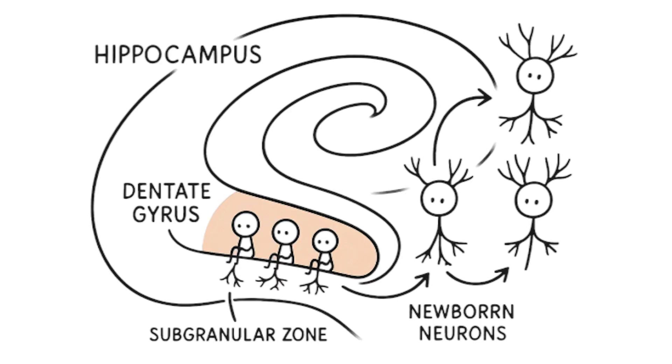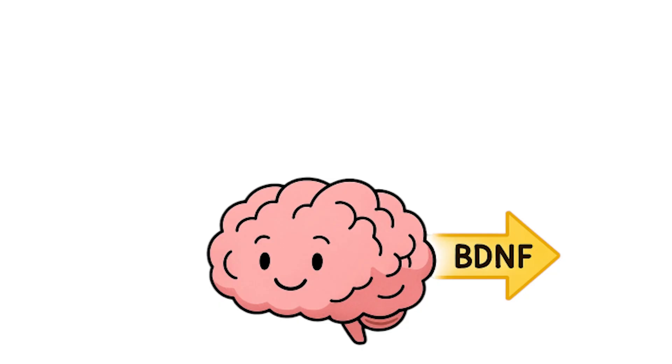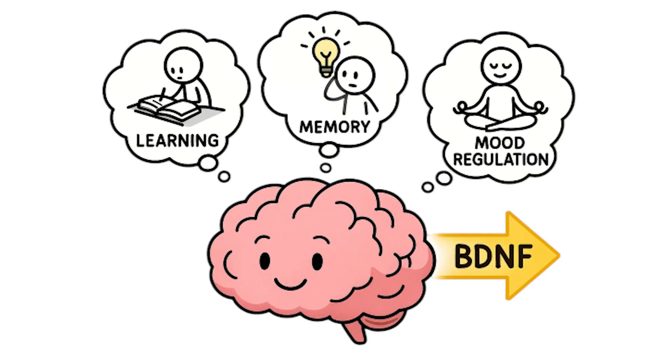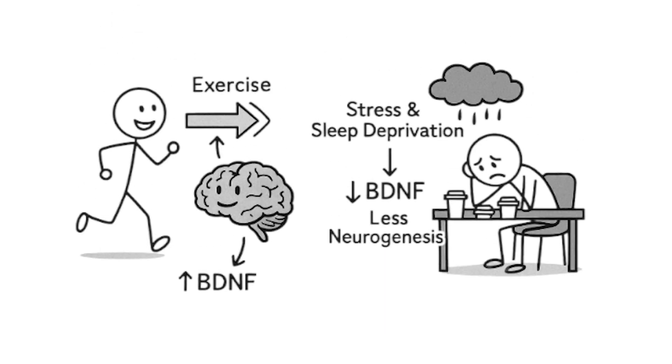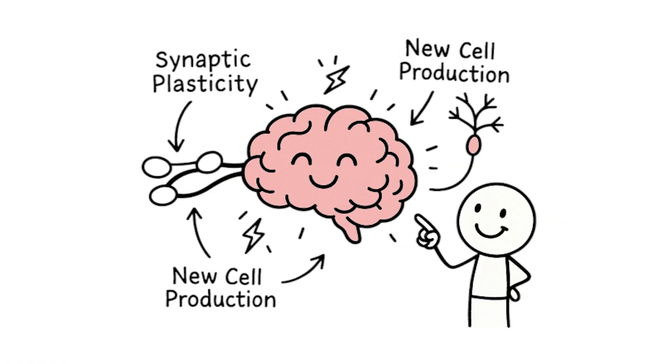These new neurons are born from neural stem cells in the subgranular zone of the dentate gyrus and migrate to integrate into existing circuits. This process is linked to memory formation, learning, and mood regulation through mechanisms involving brain-derived neurotrophic factor, in short, BDNF. Exercise increases BDNF production and promotes neurogenesis, while chronic stress and sleep deprivation inhibit it. Studies show that rats in enriched environments, with running wheels, toys, and social interaction, can increase their hippocampal neurogenesis by up to 60%. Your brain isn't fixed hardware. It's constantly upgrading itself through new cell production and synaptic plasticity.